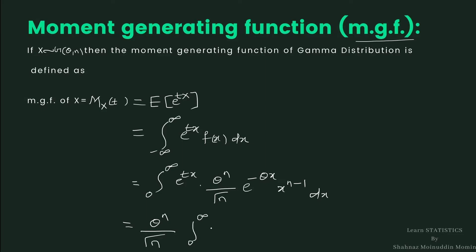We have x raised to n minus 1. We shall combine the exponential functions together. So it is e raised to minus (theta minus t) into x, dx. If we observe this integration from 0 to infinity of x raised to n minus 1, e raised to minus (theta minus t)x dx, this is a gamma integral.